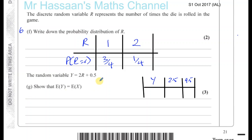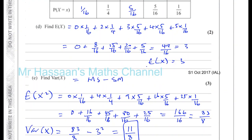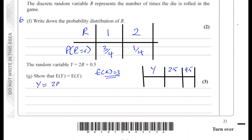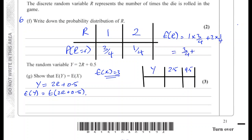We know the expected value of X is equal to 3 — that's what we found earlier in the question. Since Y = 2R + 0.5, the expected value of Y is going to be the expected value of 2R + 0.5. The expected value of R is going to be 1 times 3 quarters plus 2 times 1 quarter, which is 3 quarters plus 2 quarters, giving 5 over 4. So the expected value of R equals 5/4.